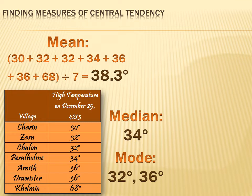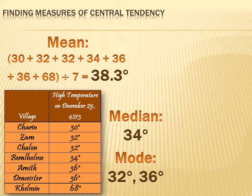The mode is the most frequent entry. There are two values of 32 degrees and two values of 36 degrees, so there are two modes: 32 and 36 degrees. But the data is unsatisfying — the median is 34, the modes are 32 and 36, but the mean is way up at 38.3. There's about four and a half degrees difference between the median and the mean — that's a big difference.